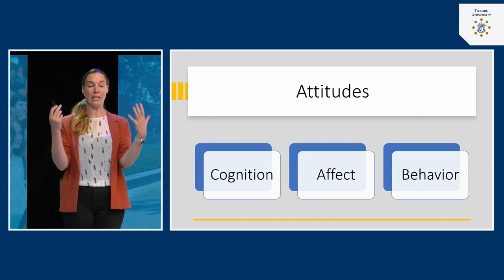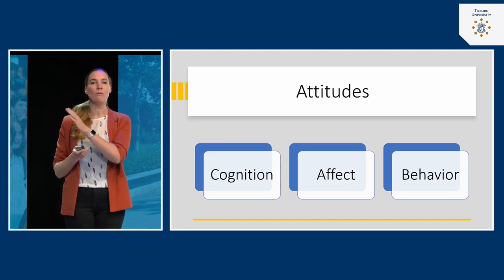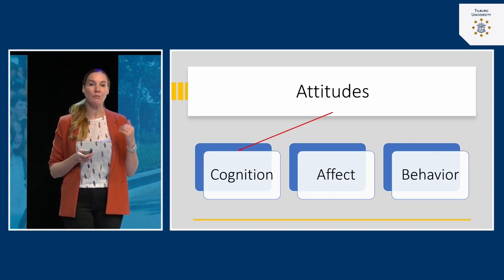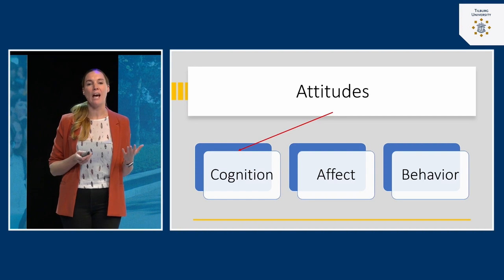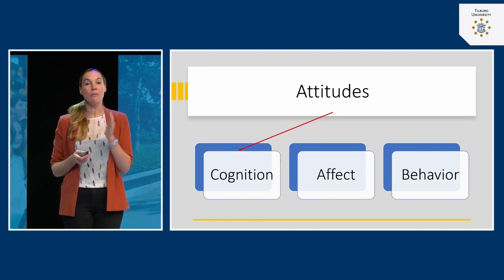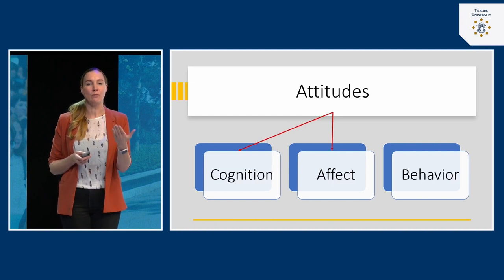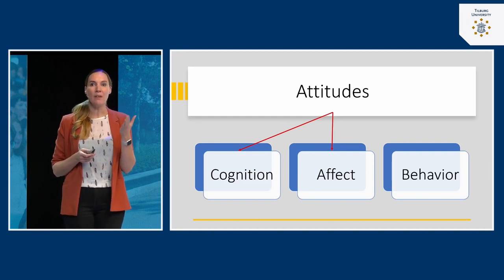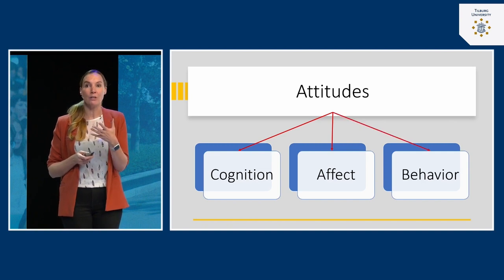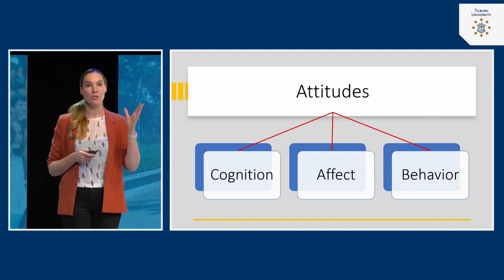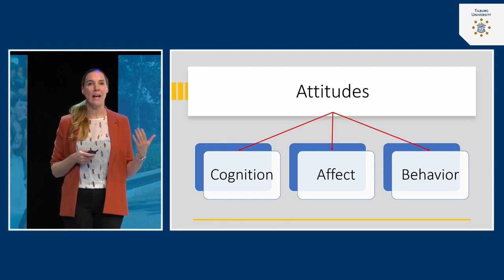Our attitudes are a general evaluation, but they consist of several parts. There's a cognitive part — what knowledge do you have about it, how much do you know about something? We also have feelings: an affective response — do you feel positive or negative about it? And finally, we also have behavior: do you tend to approach this object or person, or do you tend to avoid it? So these are the three different components of attitudes.